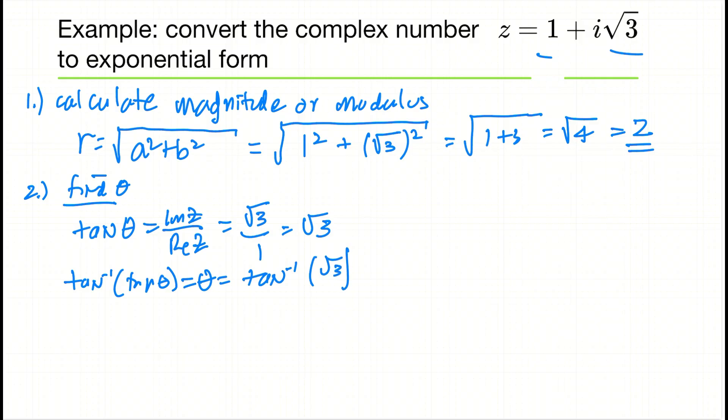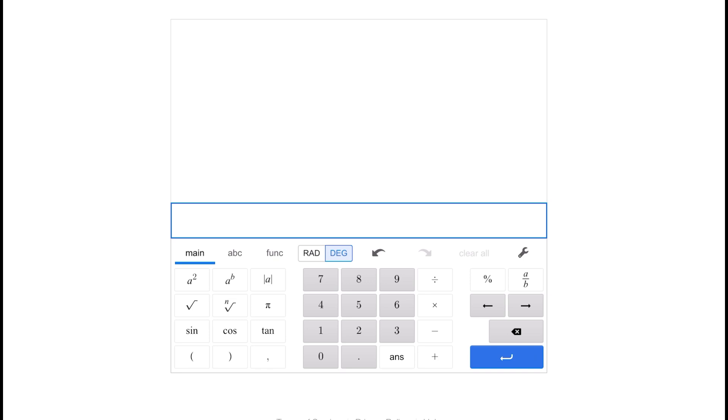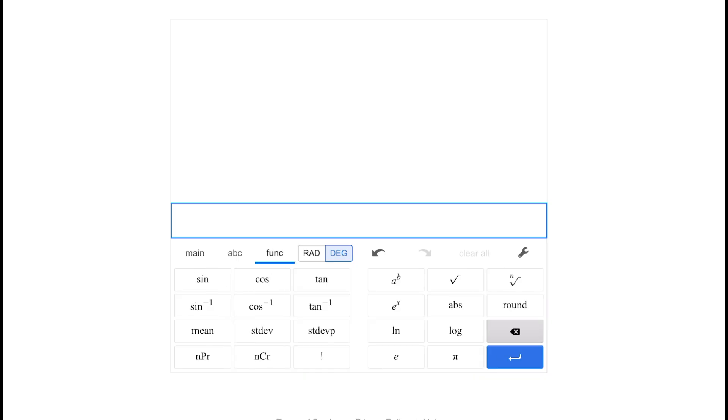Okay, let's use our Desmos calculator to do that. This is our Desmos scientific calculator. First thing I want to do—we've got it in degree mode, that's already set, so we're going to get our answer in degree mode.